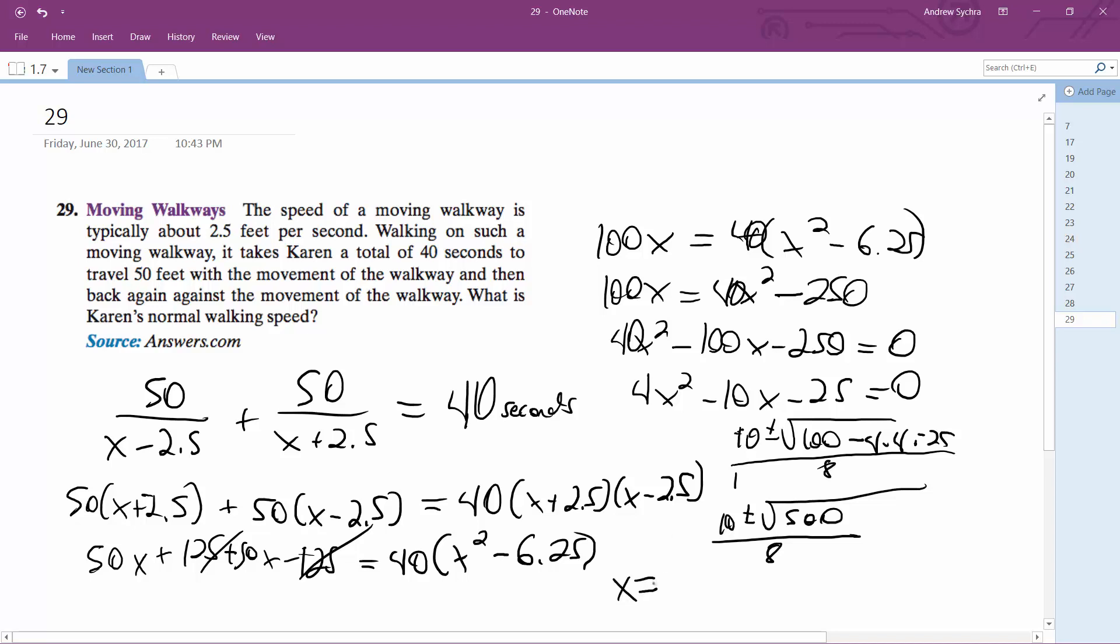So it's going to be Karen walks 4.05 feet per second. That's it.